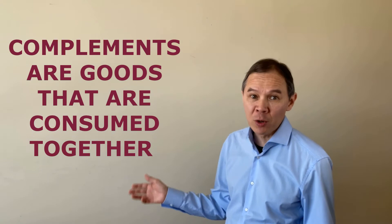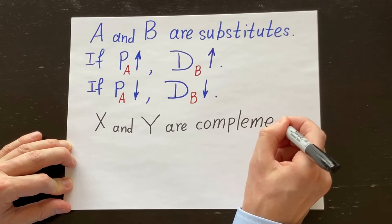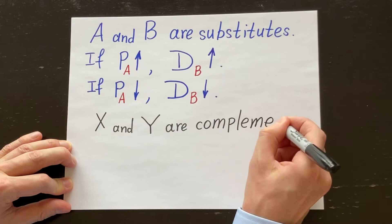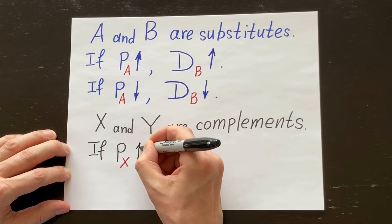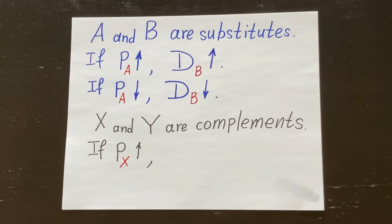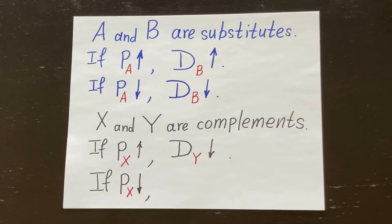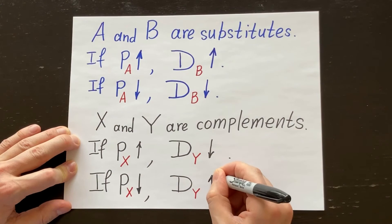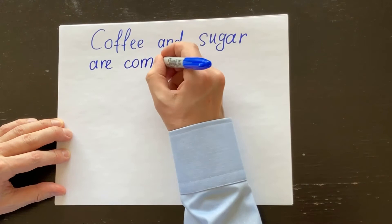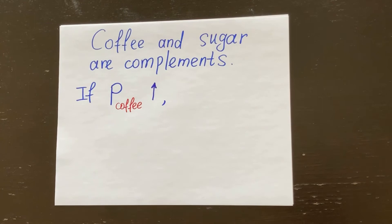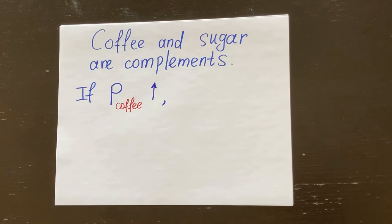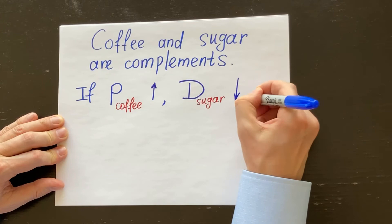This definition is not going to help you solve economic problems — you will need a proper economic definition of complements. Goods X and Y are complements; they go together. If the price of X rises, X becomes more expensive, and people will buy less of X and less of Y, so the demand for good Y will fall. And if the price of X falls, X becomes cheaper, people will buy more of X and more of Y, so demand for good Y will rise. For example, coffee and sugar are complements — they go together. If the price of coffee rises, people will buy less coffee and less sugar, so the demand for sugar will fall and the demand curve will shift to the left.